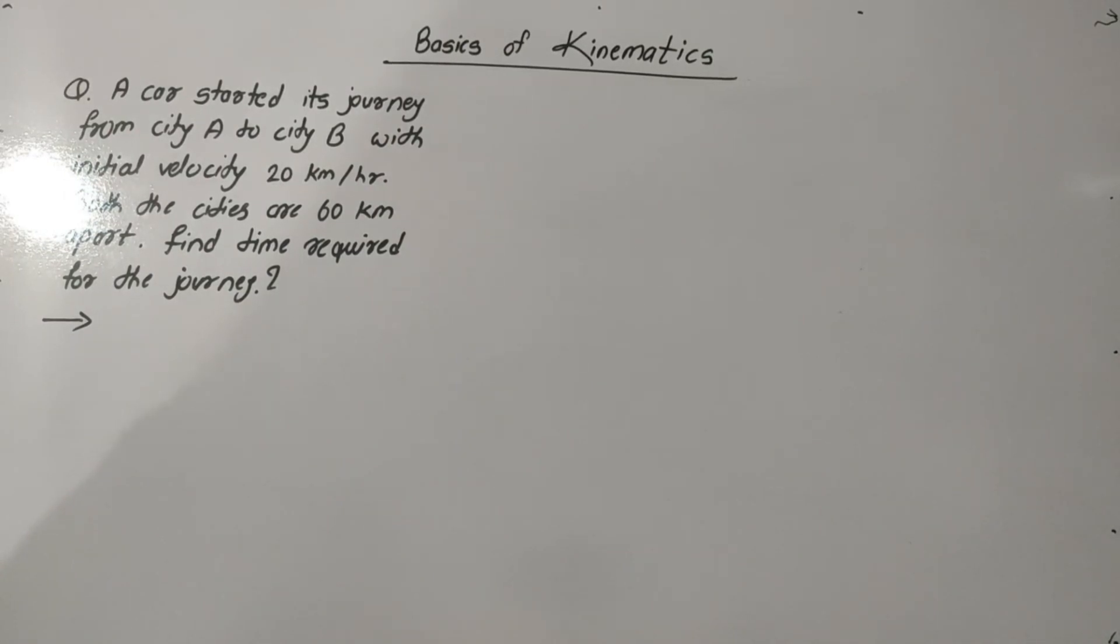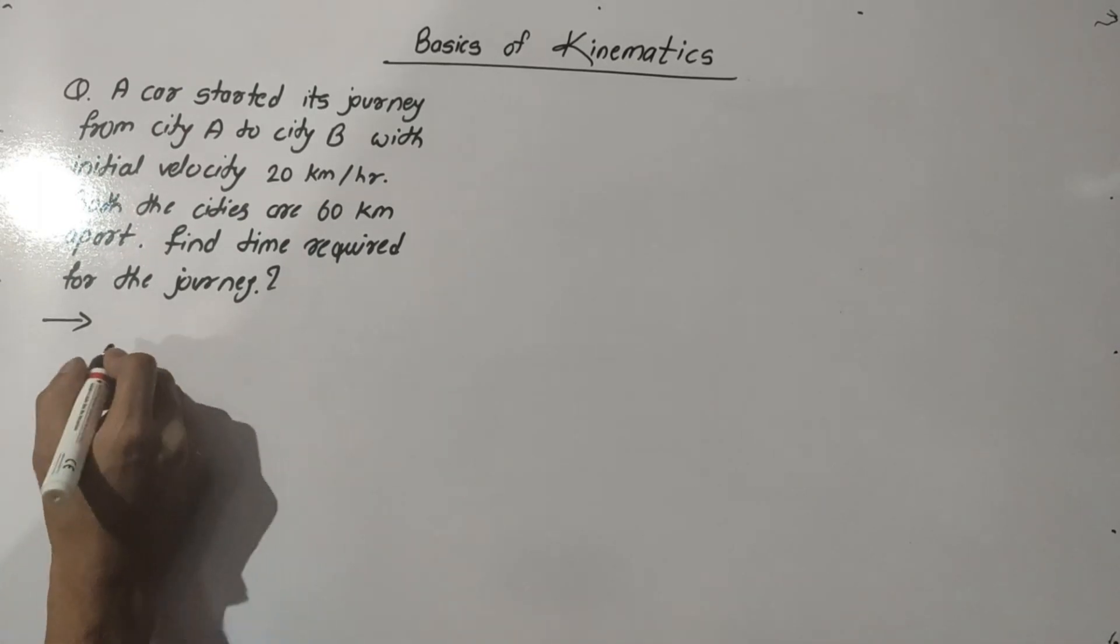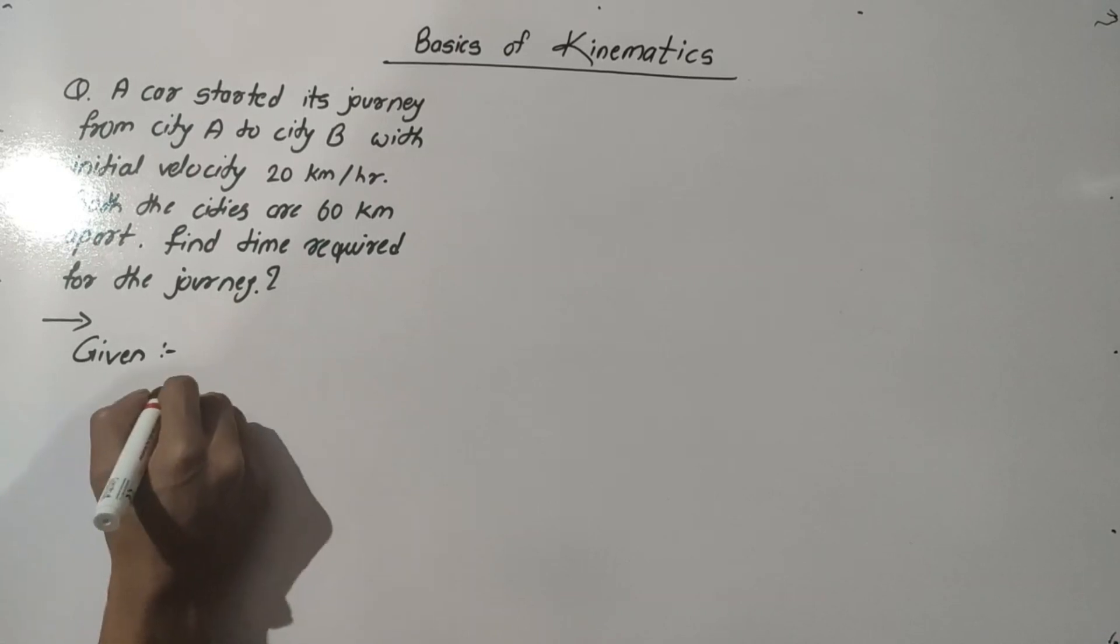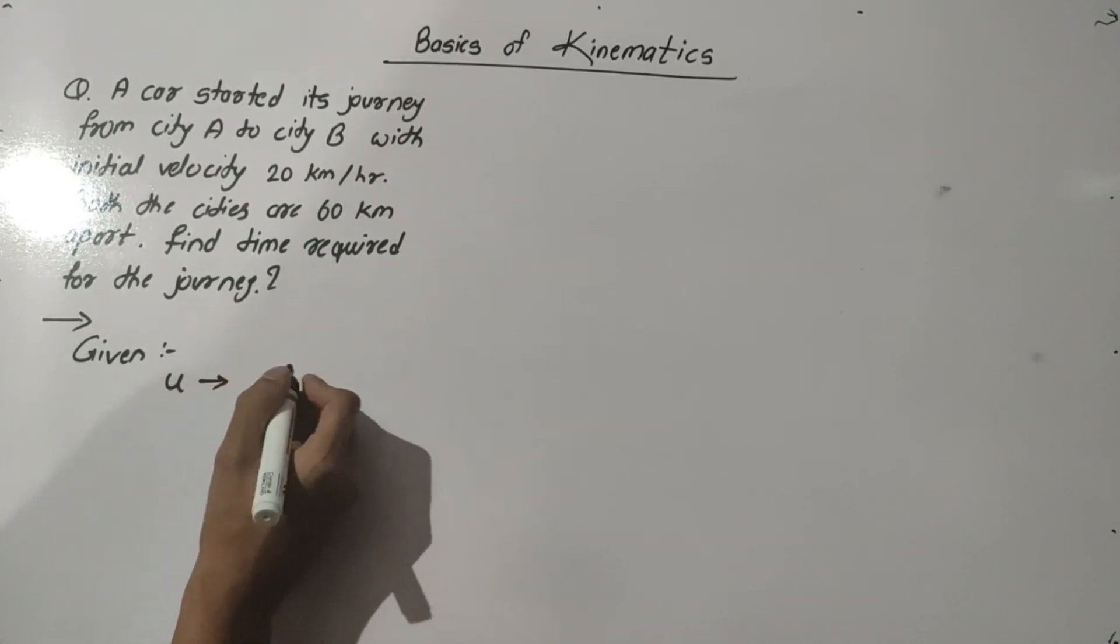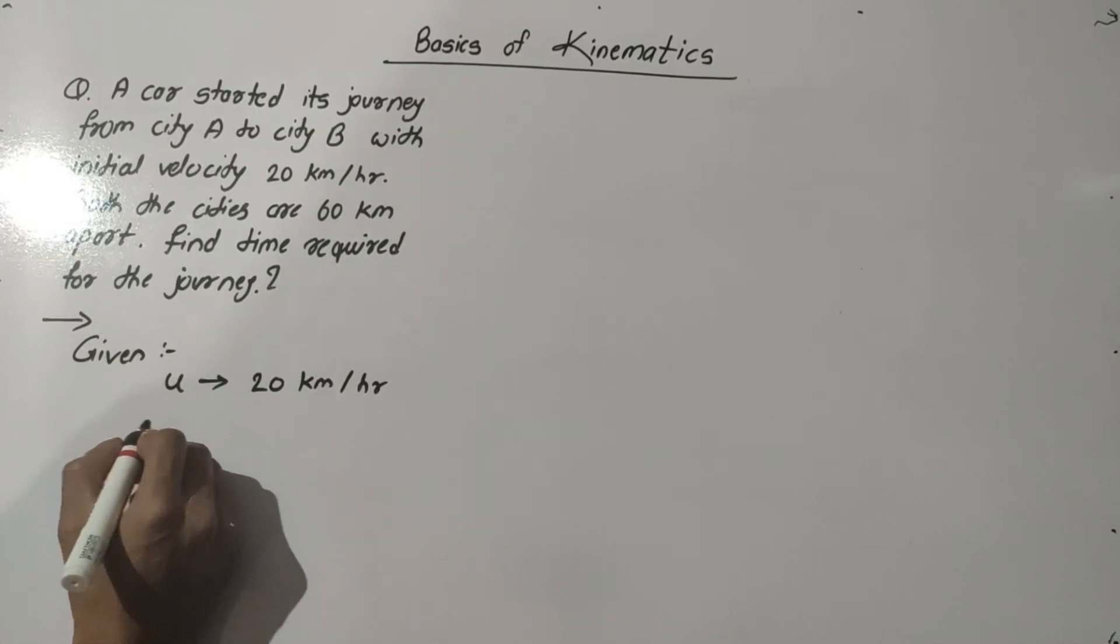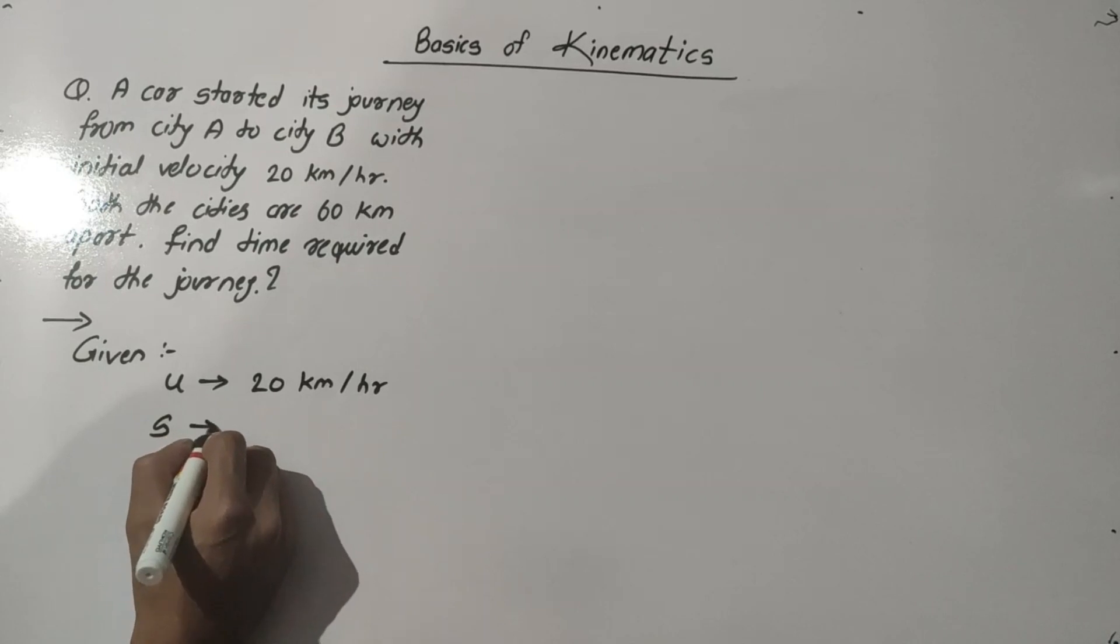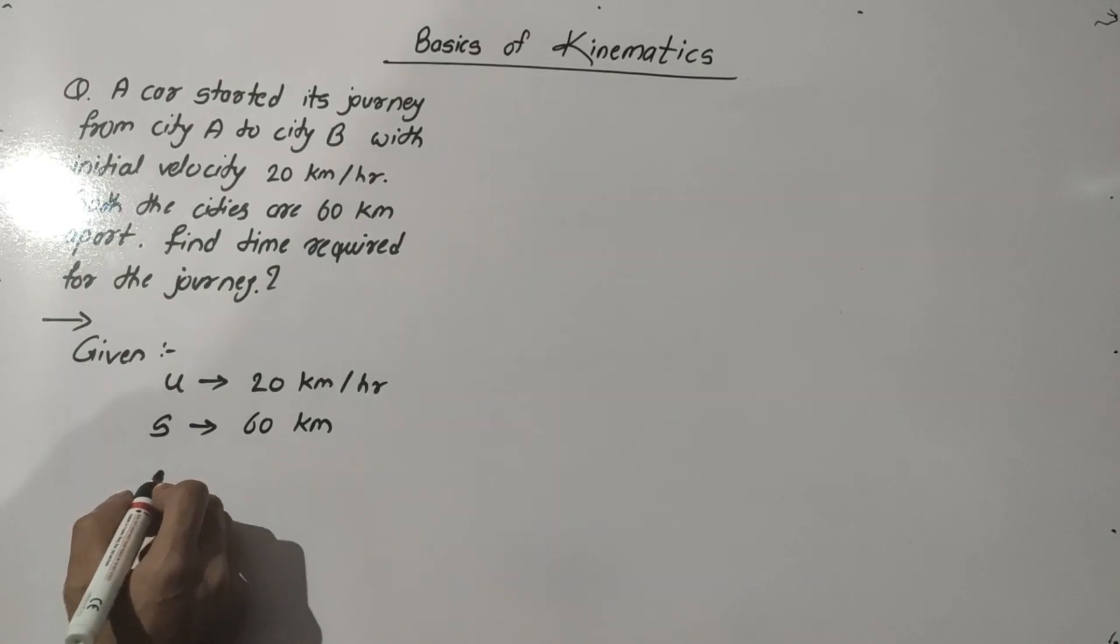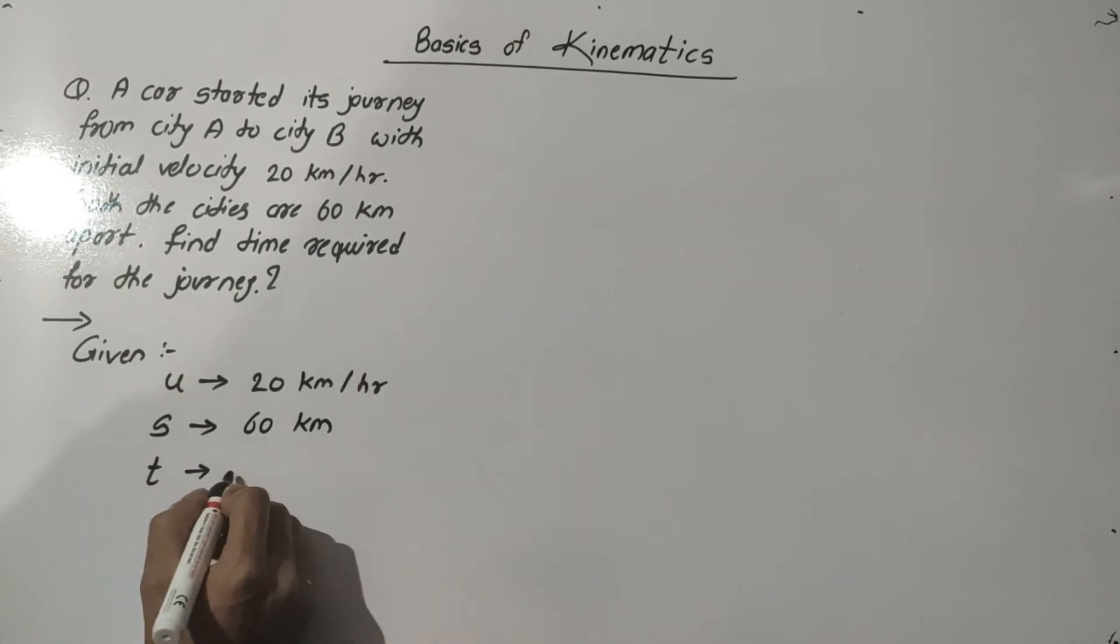As explained in previous videos, it is better habit to note down the key points from the question as a given section. So let's start with the solution. We have: first, U - the initial velocity of the car is 20 km per hour. Then the distance between the cities, denoted by S, is 60 km. And we are asked to find the time required for the journey.